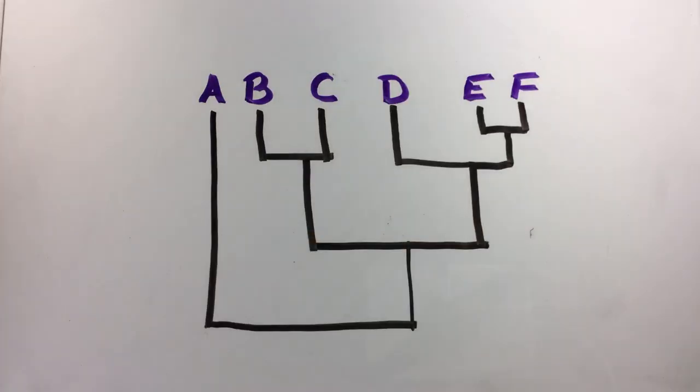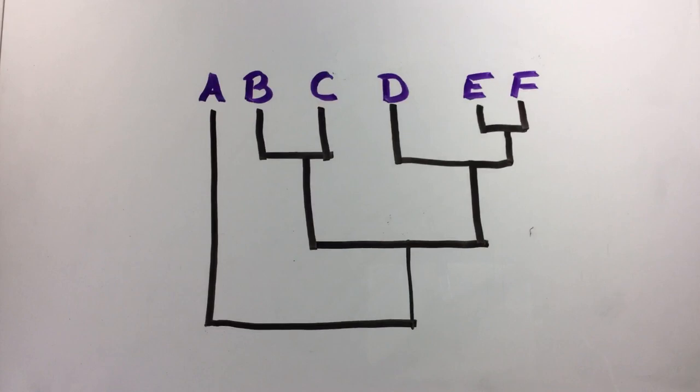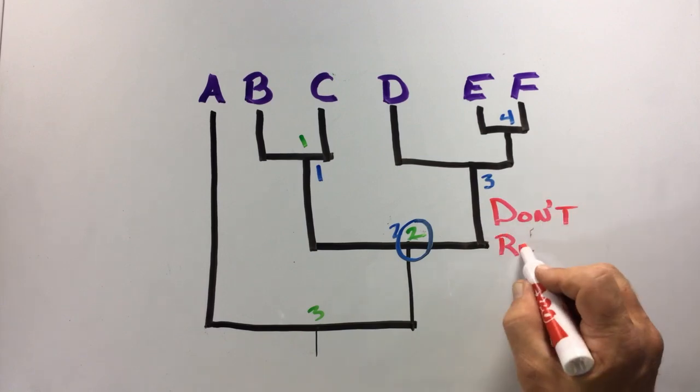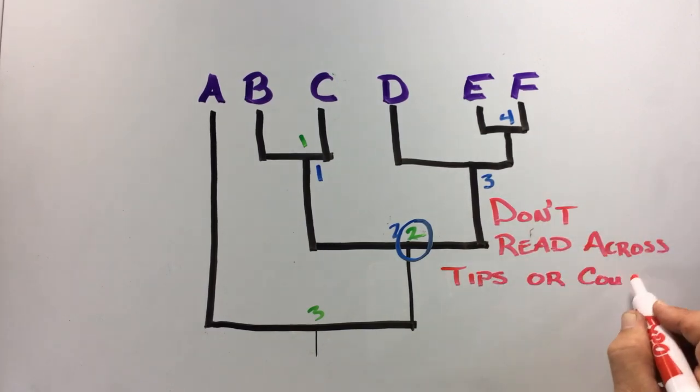Now let's look at another example. Who is C more closely related to? A or F? If you chose A, you may be reading across the tips again. Although C is closer to A in this phylogeny, it shares a more recent common ancestor with F, and is therefore more closely related to that species. You may have also chosen A because there were fewer nodes between C and A than there are between C and F. This is something called node counting, and it is also an incorrect way to interpret a phylogeny. All that matters are the pattern of most recent common ancestors. So to interpret trees correctly, don't read across the tips or use node counting to determine relationships.